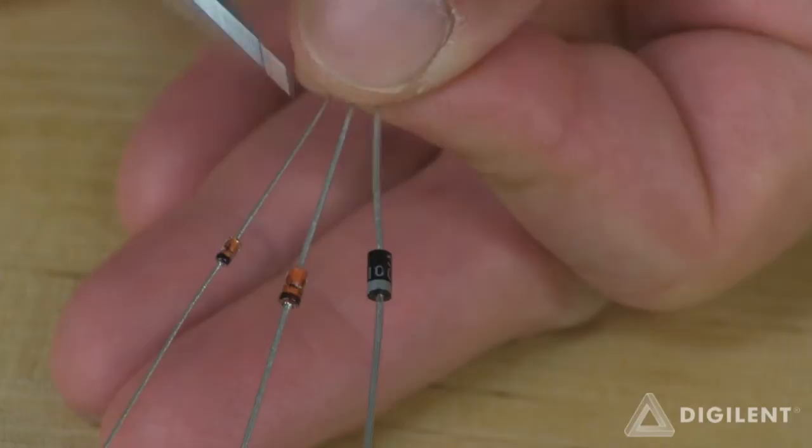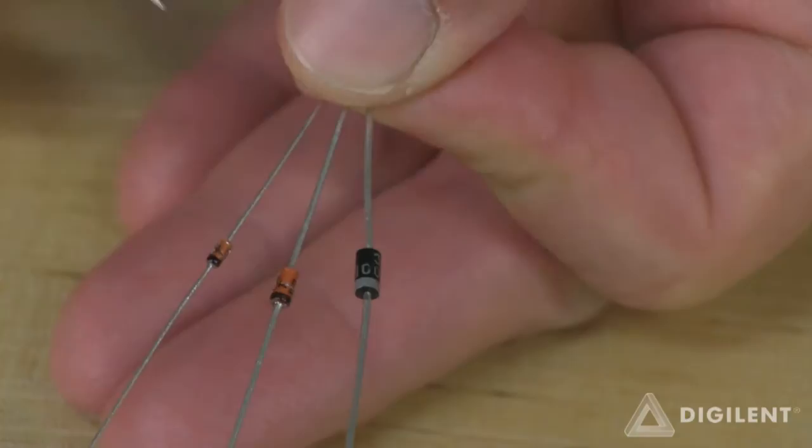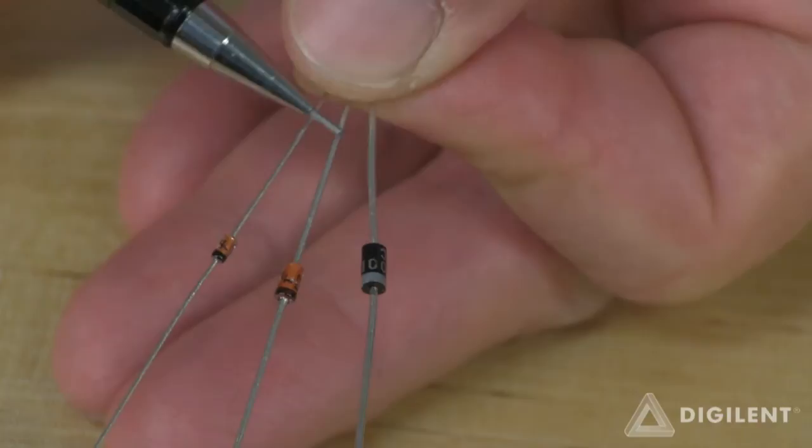There are a variety of diodes in the Digilent analog parts kit. Here are several of them. Diodes will have a stripe either light or dark at one end. The end with the stripe is the cathode. So on these diodes, the anode is the terminal that's closest to my fingers.